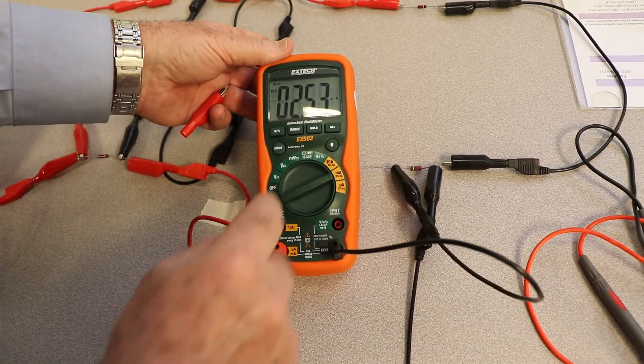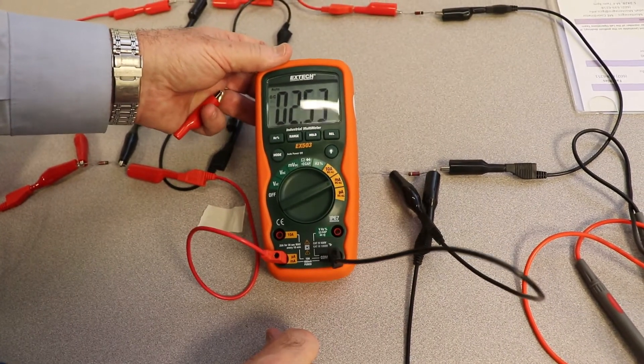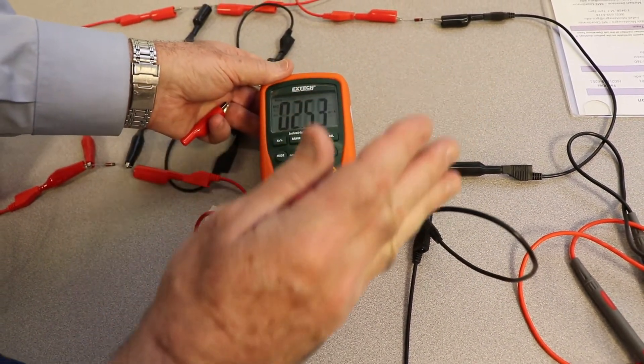So the current came through here, went through the meter, came out here, and is going on its merry way. See how that works? So you got to break the circuit wide open.